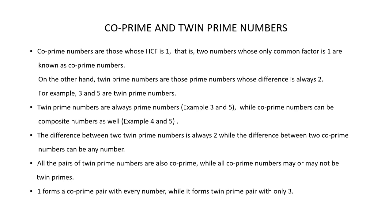The numbers 3 and 5 are twin prime numbers and their difference is 2. But for co-prime numbers 1 and 2, the difference is 1, and for co-prime numbers 1 and 50, the difference is 49. So the difference between two co-prime numbers can be any number. All pairs of twin prime numbers are also co-prime, while co-prime numbers may or may not be twin primes.